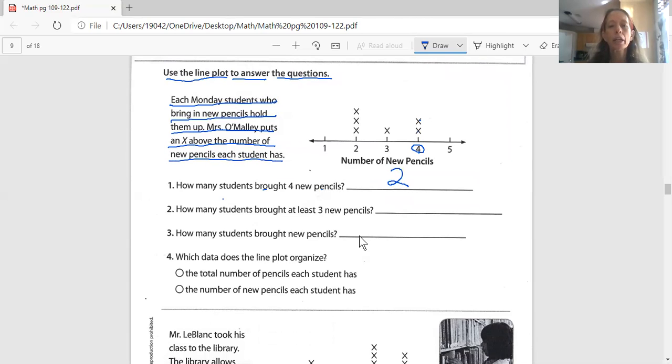And number two says, how many students brought at least three new pencils? Math words are so important because if we didn't look at at least, we would have just answered how many brought three pencils. And that's not right. The question says, at least, that means three or more. So we have to count three and we have to count whatever's over here as well. So that's why it's always important to look at our math words. They're really going to give us a lot of information. And this one wants to know at least three new pencils. So three new pencils or four new pencils or five new pencils. We have to add all of these up. So we look at the three, which has one, four, which has two. So one, two, three. So our answer is three.